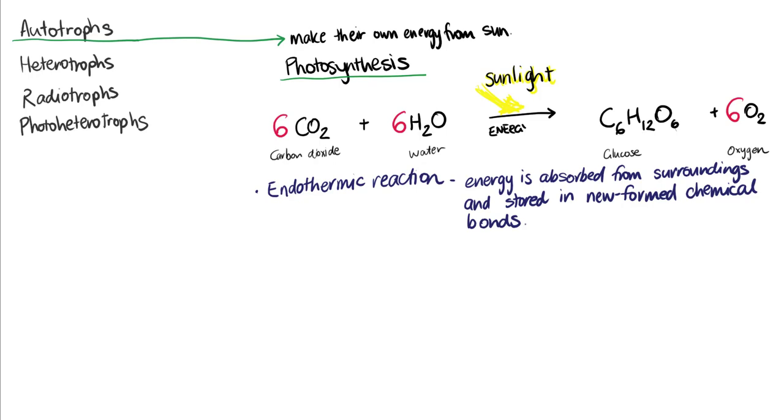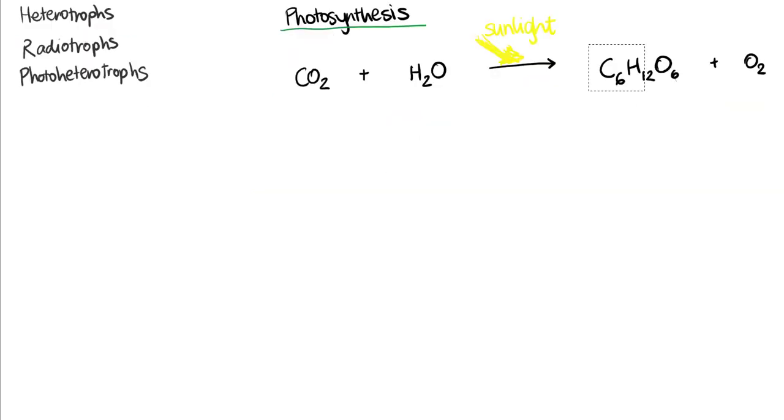When an organism needs some energy, it takes that same reaction and does it backwards. So some glucose plus some oxygen can go to carbon dioxide and water, and we'll balance that out again.